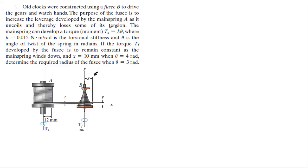They tell you that the main spring can develop a torque moment of Ts = k·θ, where θ is in radians, and k is a constant equal to 0.015 Newton-meters per radian. That is the torsional stiffness, and θ is the angle of twist of the spring in radians.